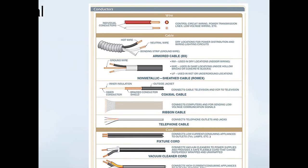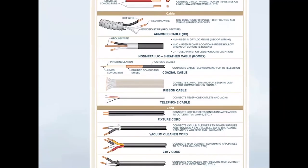Then we have coax cable for your TV cable connections. Ribbon cable is used in computer and other low-voltage communication devices. Then we have our telephone cable, which distributes telephone signals.